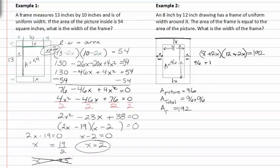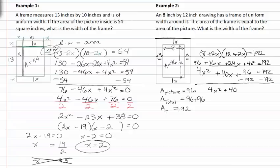We get ninety-six plus sixteen x plus twenty-four x plus four x squared equals one ninety-two. Then we rewrite this in descending order of exponents and add like terms. We get four x squared plus forty x plus ninety-six equals one ninety-two. Subtract one ninety-two from both sides and we get four x squared plus forty x minus ninety-six equals zero. Everything is divisible by four and we get x squared plus ten x minus twenty-four equals zero.